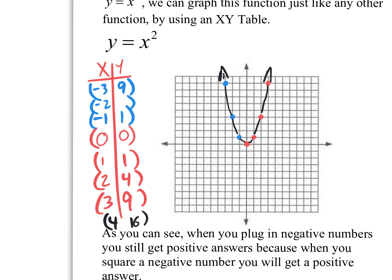Now I want to mention the most important point of any parabola — it's either the highest point or the lowest point. In this case, it would be this dot right here — that's the lowest point of this parabola. That is called the vertex. Go ahead and write 'vertex' right here and underline it. That dot is the lowest point.